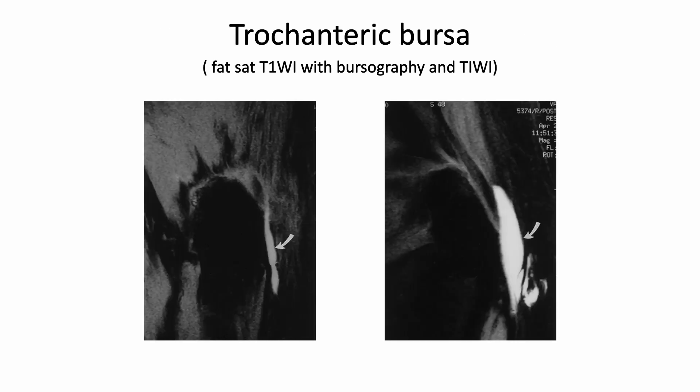Gluteus medius tendon pathologies may relate to trochanteric bursitis or lateral trochanteric pain. Therefore, you need to observe the bursal fluid or tendon pathologies nearby to find the pathology with ultrasound scan.